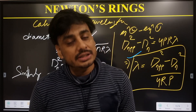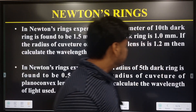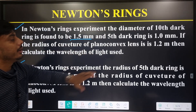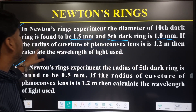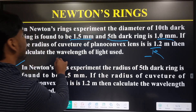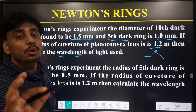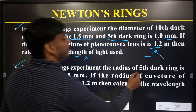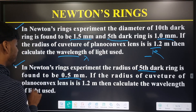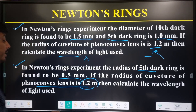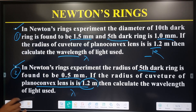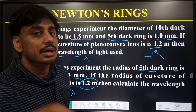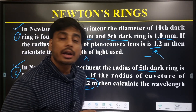Now your work is to practice all these derivations as well as the numericals. Numerical 1: In a Newton's ring experiment, the diameter of the 10th dark ring is 1.5 mm and the 5th dark ring is 1.0 mm; radius of curvature R is given - find the wavelength. Numerical 2: In a Newton's ring experiment, the radius of the 5th dark ring is 0.5 mm and the radius of curvature of the plano-convex lens is 1.2 m - calculate the wavelength. Let me know your answers in the comments and I will check each one. See you in the next video, thank you.